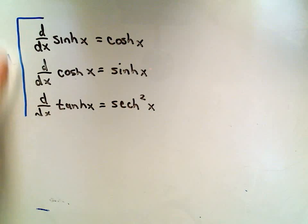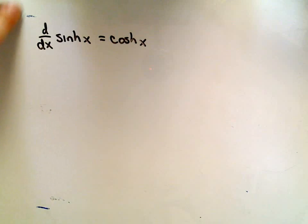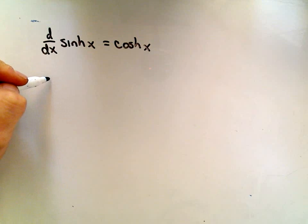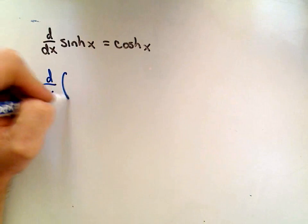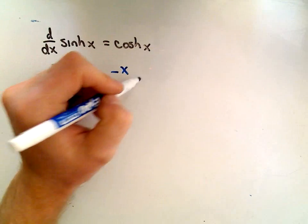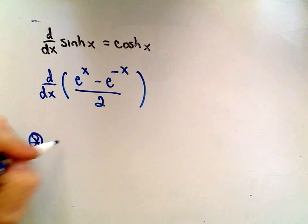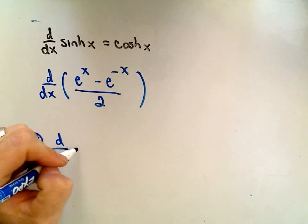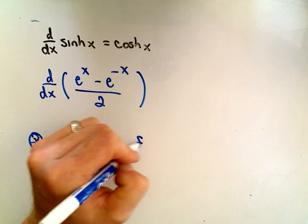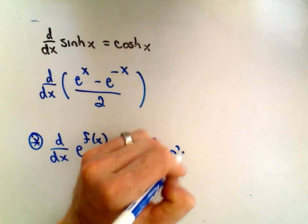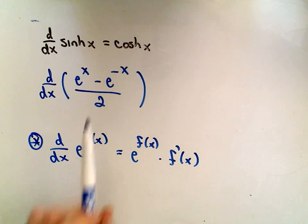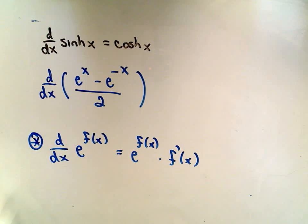These are easy to justify. The proof of any of these derivatives just comes straight from the definition. The basic formula you have to remember: if you have the derivative of e to some function, the derivative of that is e to that function, but then you have to use the chain rule and multiply by the derivative of the exponent.